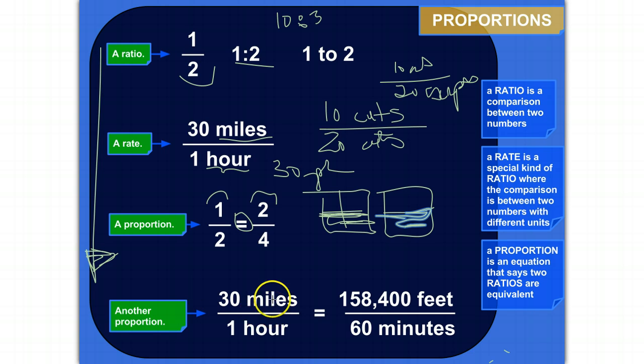Here's another proportion. It's saying that two ratios are equivalent. In this case, I'm using a special kind of ratio on each side, and that kind of ratio is called a rate because I'm comparing numbers in two different units.